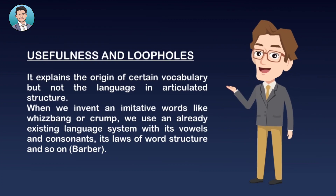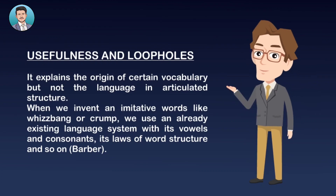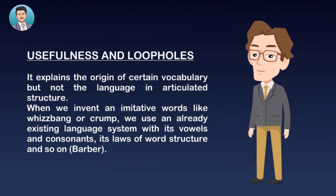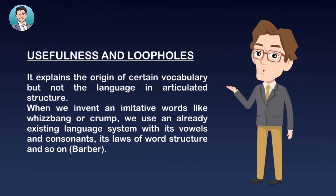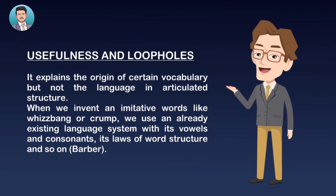The usefulness of this theory is that we have a certain set of vocabulary that was developed. The loophole, however, is that we only explain vocabulary, not the whole language system. Charles Barber points out that when we use these imitative sounds and words, we already have a language system with its vowels, consonants, morphology, and syntax. But since there was no such language system in the past, what kind of sounds would early humans imitate? That is the loophole.